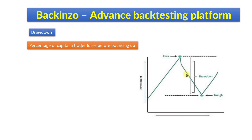Either way, losses started eating up your capital and your account value began to decline. In this case, the maximum value of the account from where you started to see the decline is called the peak, and the subsequent low point from which you recovered is called the trough. The percentage difference between these two points is called drawdown.